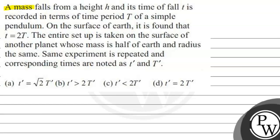Hello, let's read this question. A mass falls from a height h and its time of fall t is recorded in terms of the time period T of a simple pendulum. On the surface of the earth, it is found that small t equals 2 times capital T.